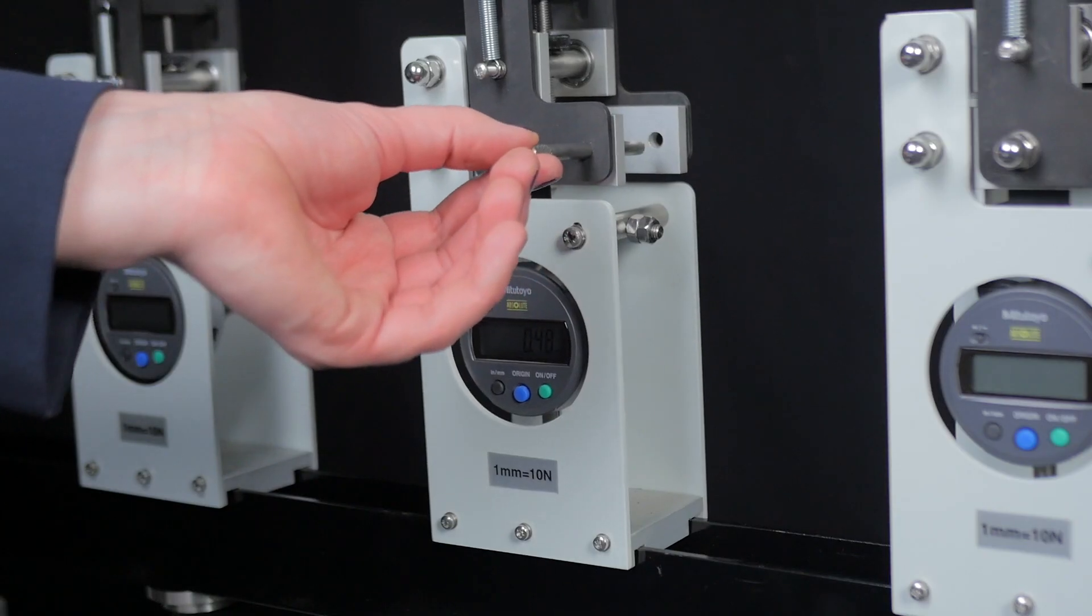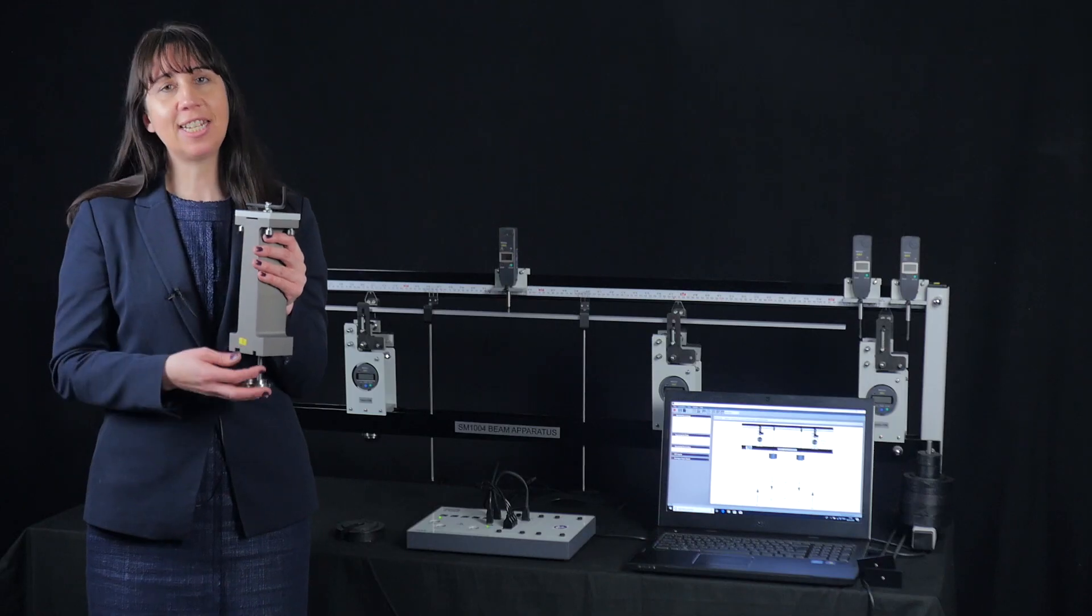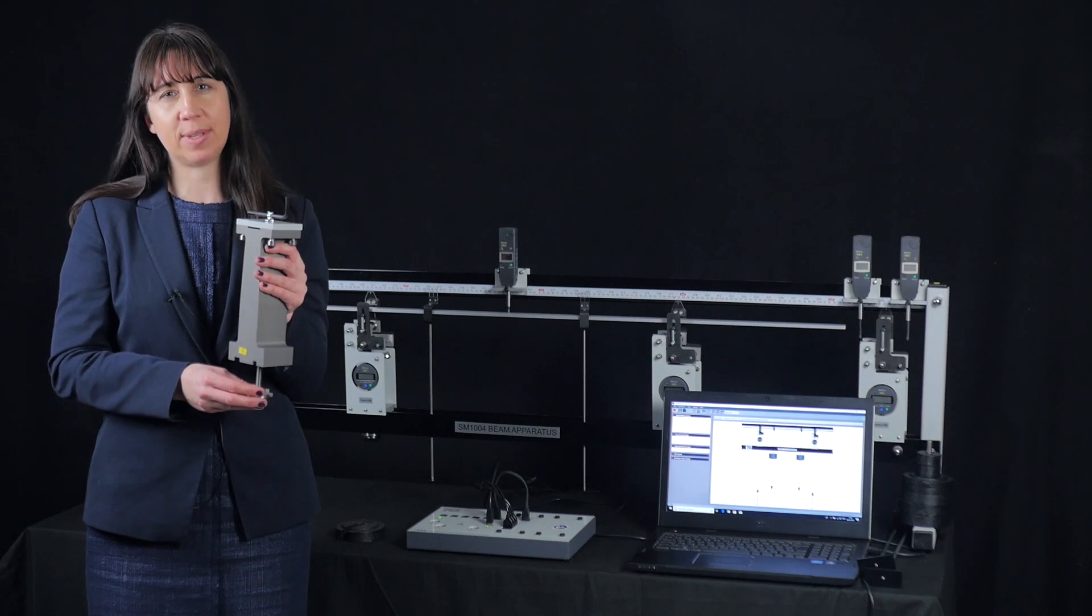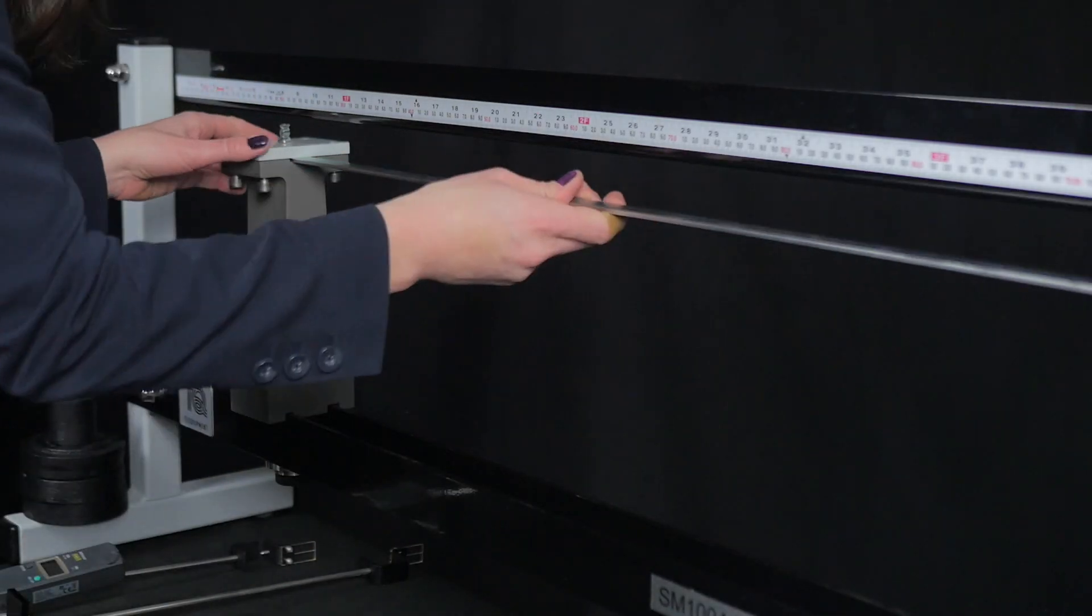The locking pins here convert the load cells into rigid support when required. The cantilever support here is a rigid pillar with a sturdy clamping arrangement to hold the beams when built-in end conditions are required.